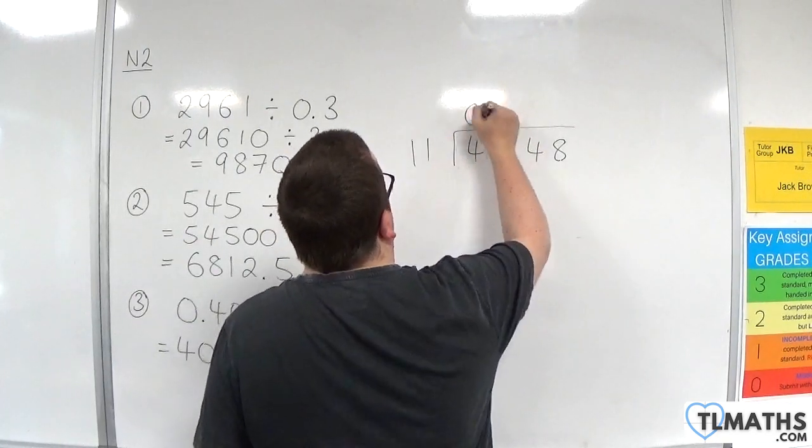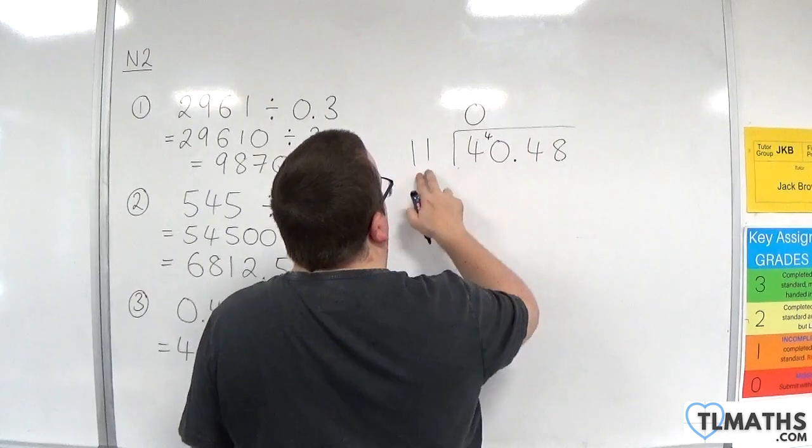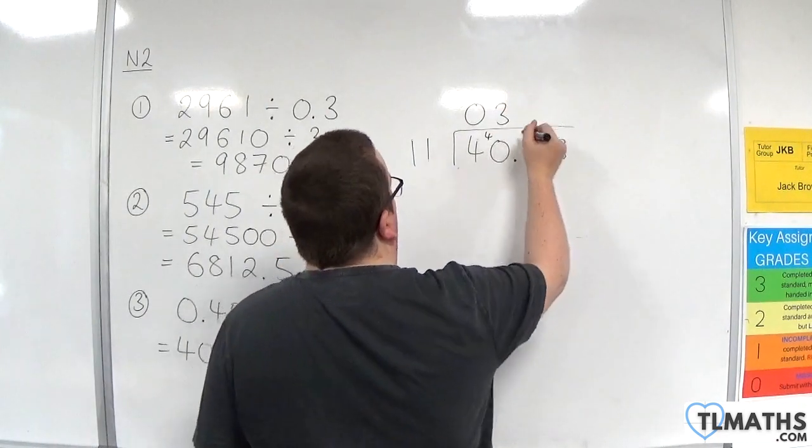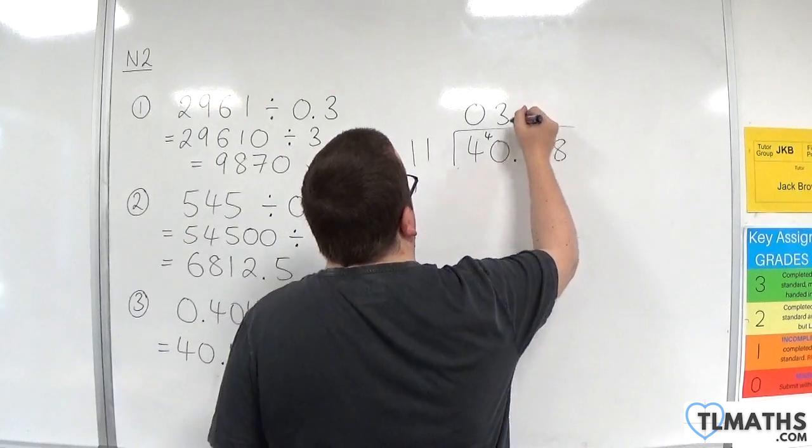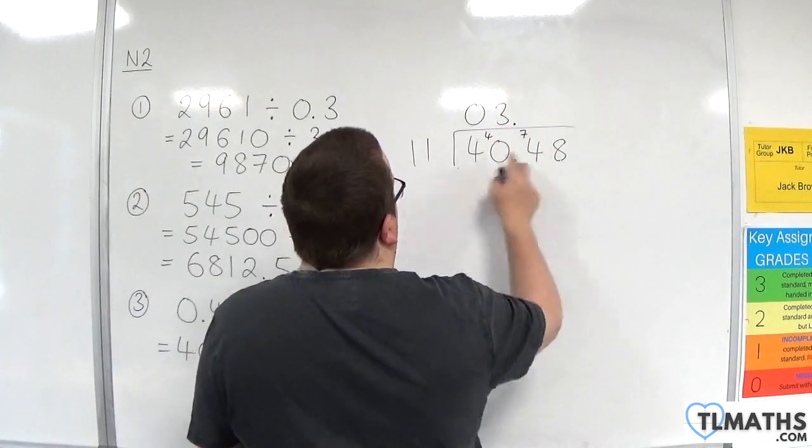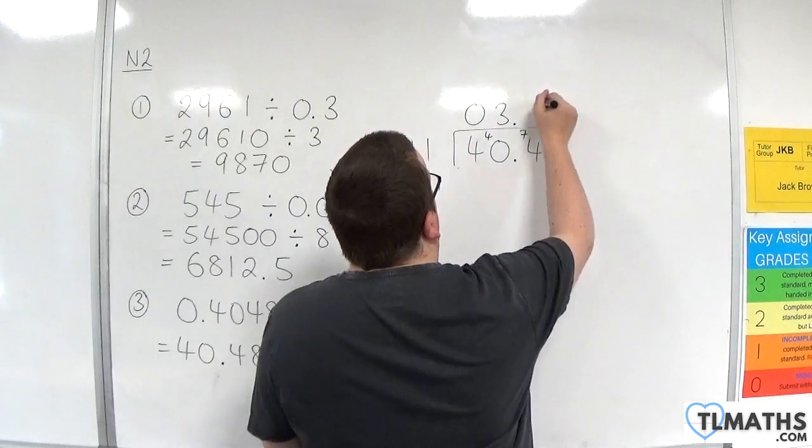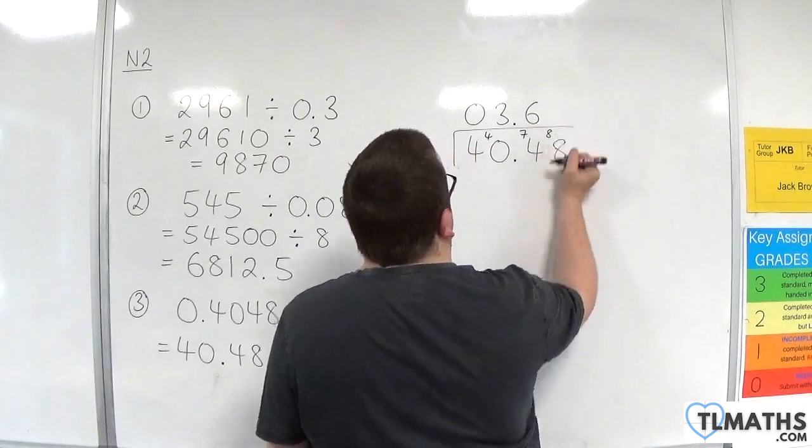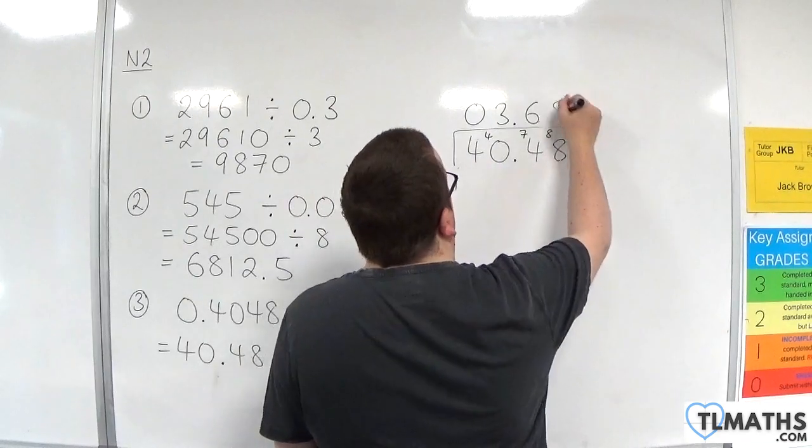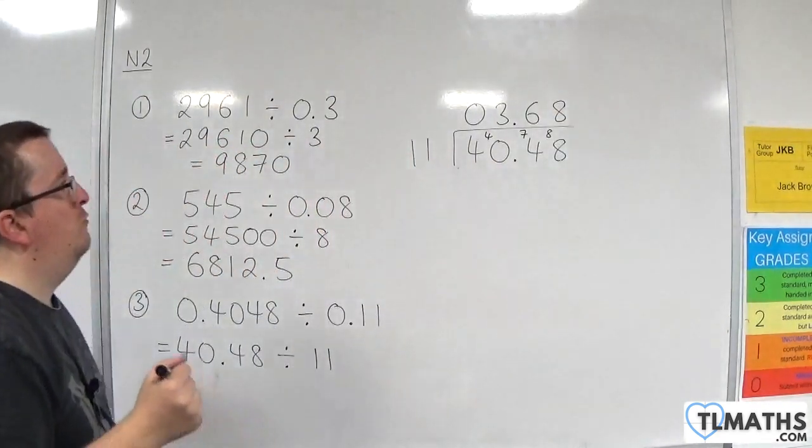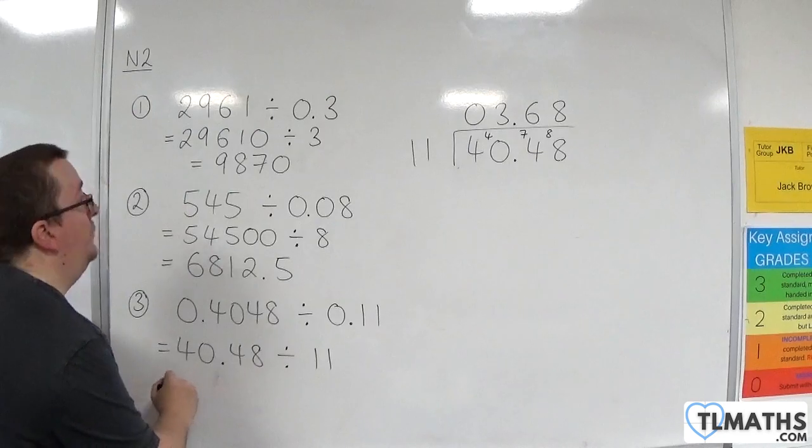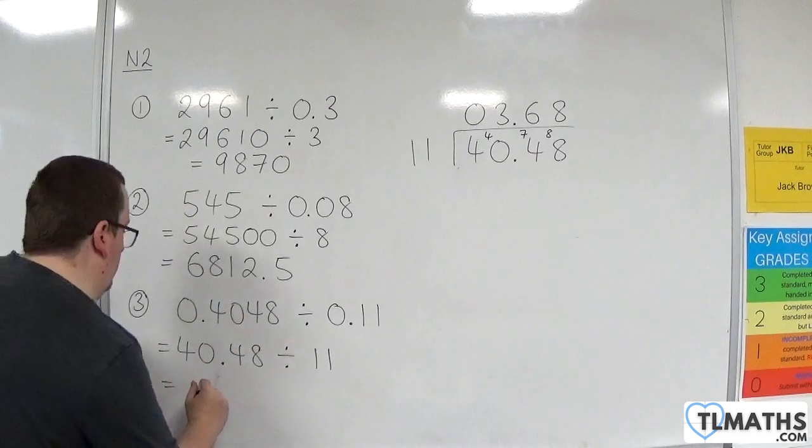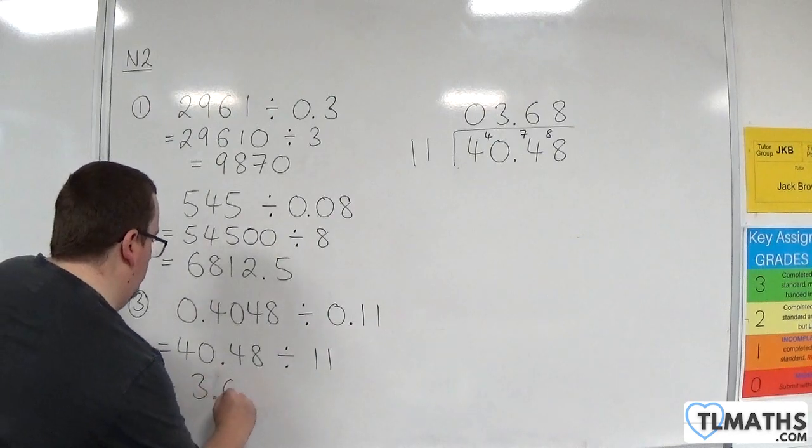11 into 4 goes 0 with 4 left over. 11 into 40 goes 3, 3 elevens are 33 with 7 left over. Bring in the decimal point. 11 into 74 goes 6, 6 elevens are 66 with 8 left over. 11 into 88 goes 8 with 0 remainder. So 0.4048 divided by 0.11 is 3.68.